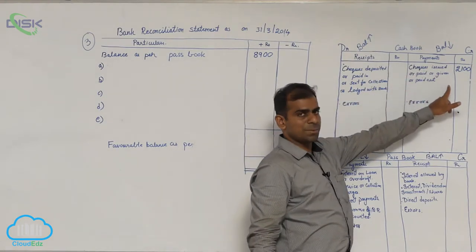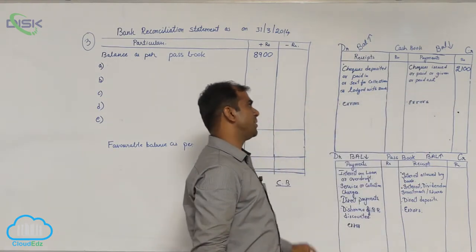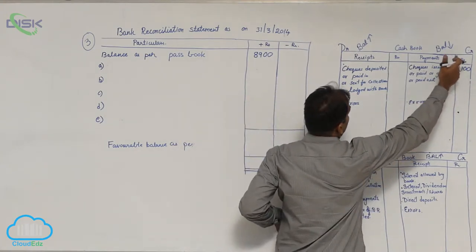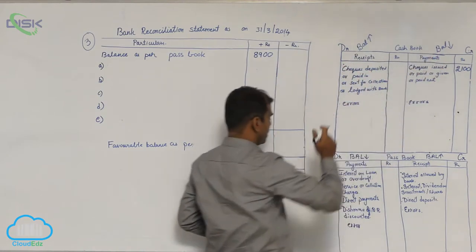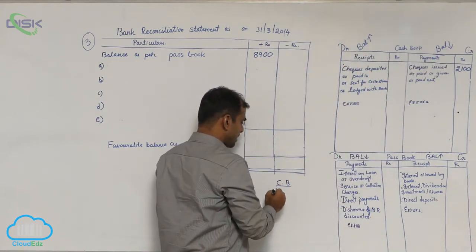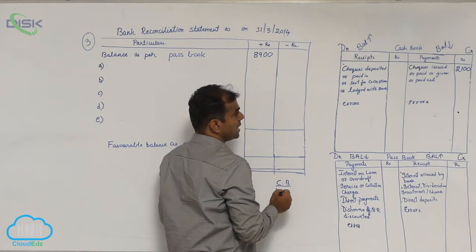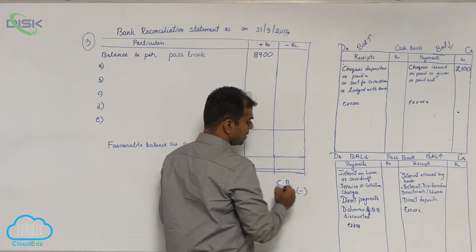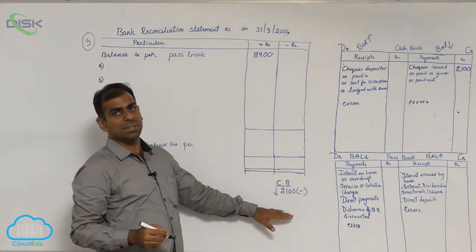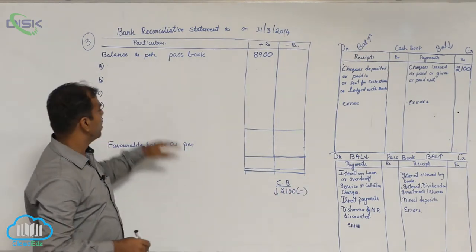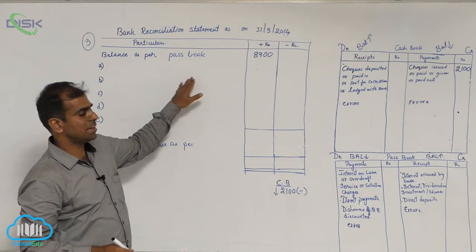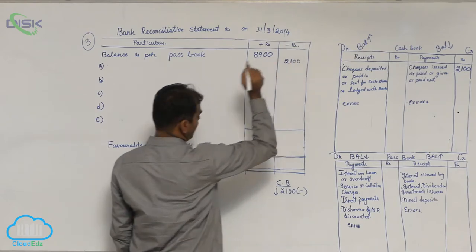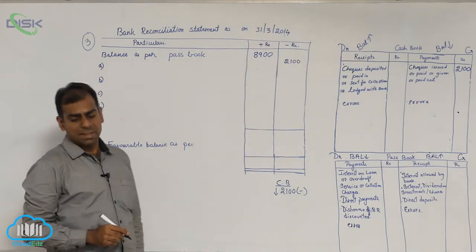Here the entry is in cashbook. Find the impact of this entry on the cashbook. So 2100. So 2100 when you have entered on the credit side, cashbook balance comes down. So cashbook balance is less. Less means we have to minus homage 2500. So ultimately we have to deduct 2100. Whatever is the statement, write it and write against it 2100 in minus column.